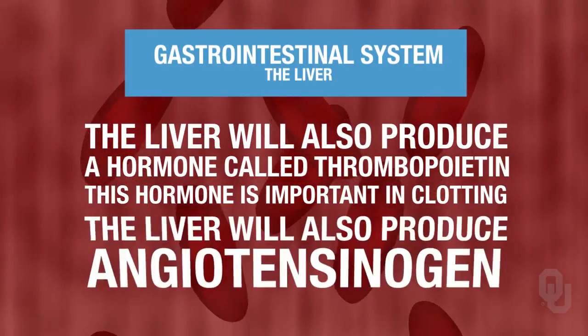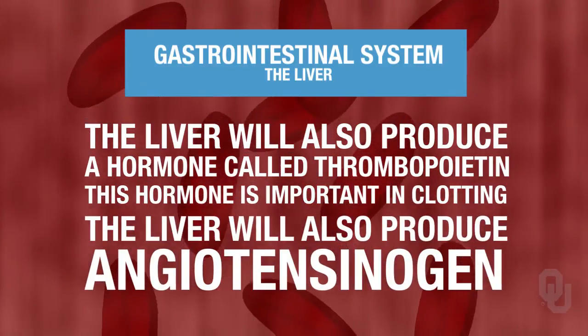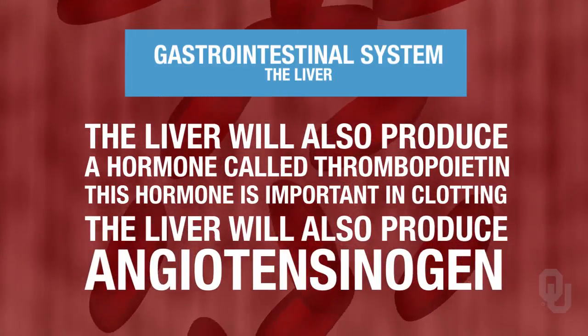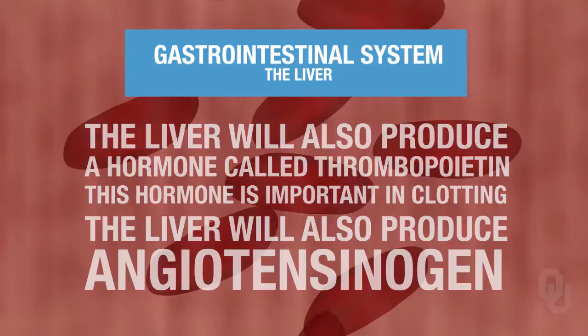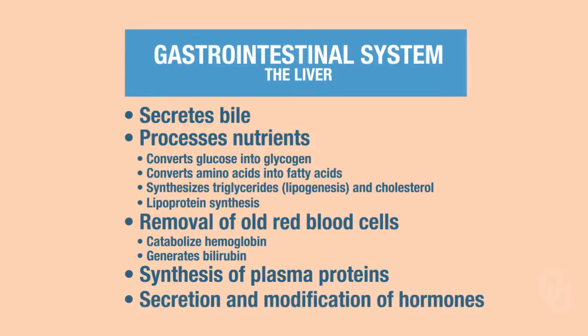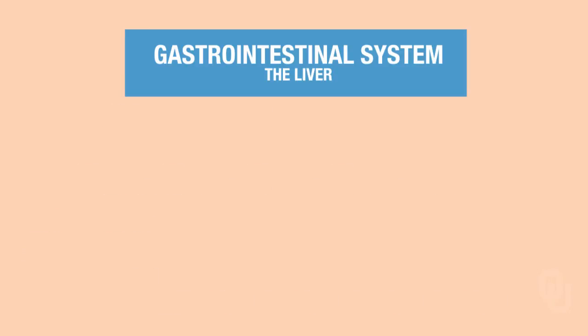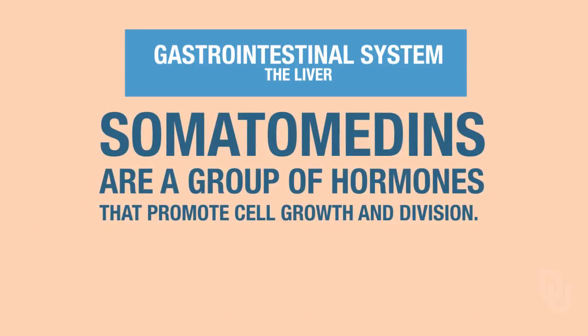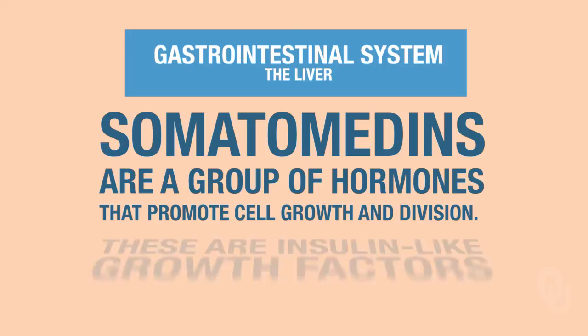The liver also produces angiotensinogen. Lastly, the liver will secrete and modify hormones. One example we'll use later is the somatomedins, which are insulin-like growth factors — we'll discuss those later.